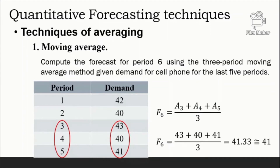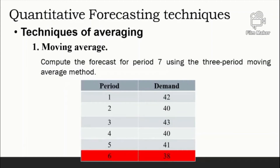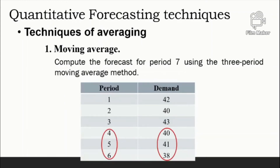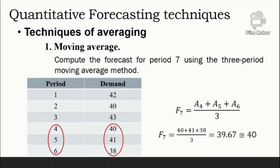The forecast for period six, F6, is 41 cell phones. If actual demand in period six turns out to be 38, the three-period moving average forecast for period seven would be the average of the demands of periods four, five, and six, which is 40.